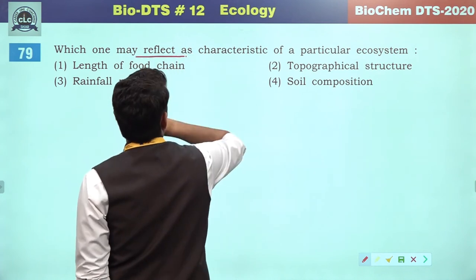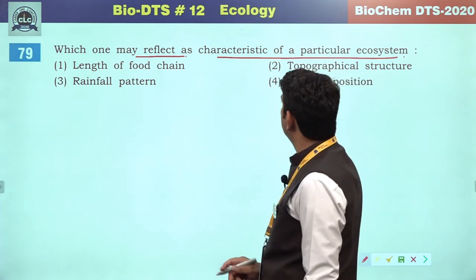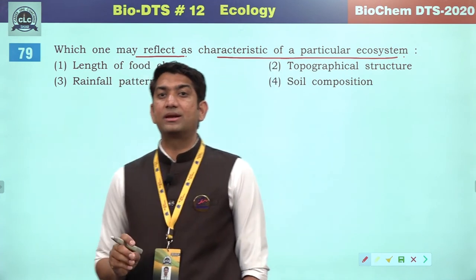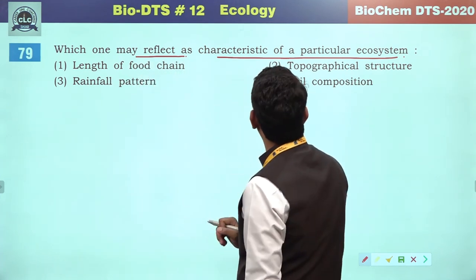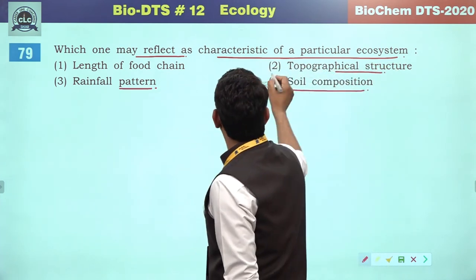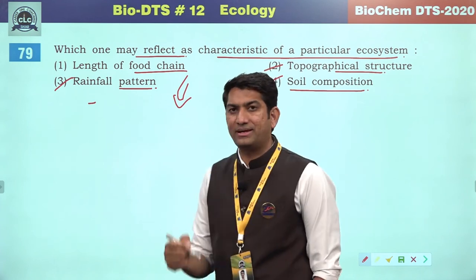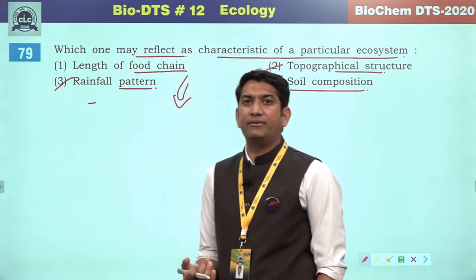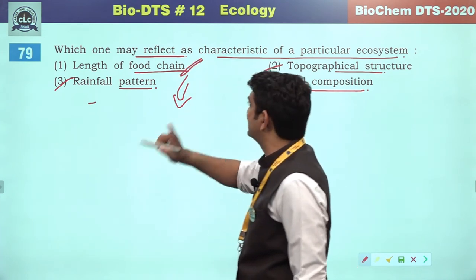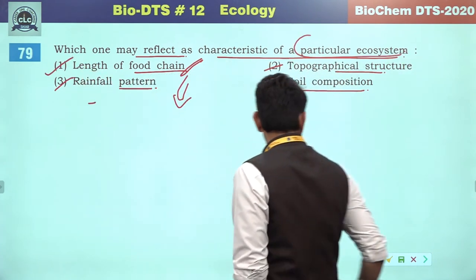Which one may reflect as the characteristic of a particular ecosystem? Soil composition, topographical structure and rainfall pattern are abiotic references. Length of food chain — food chain establishes organism connectivity and depends on abiotic factors — it represents the functional existence and will be the characteristic of the particular ecosystem. The first will be the correct answer.